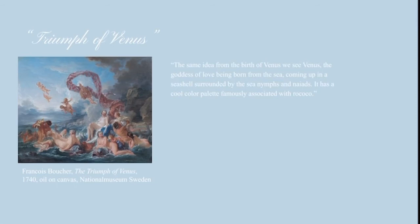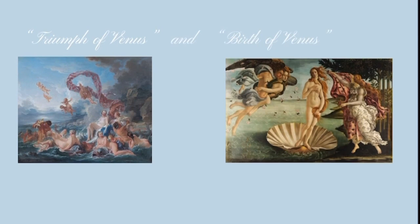Now, in the Rococo painting, it's more lively and energetic and lustful — you can feel it coming up to the picture. Beauty is in the eye of the beholder, and art style is subjective. So however these artists decided to depict and paint Venus, she is eternally beautiful, and she symbolizes exactly that: love, beauty, and desire.